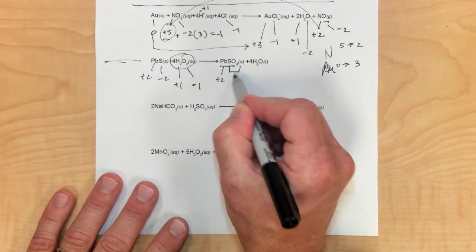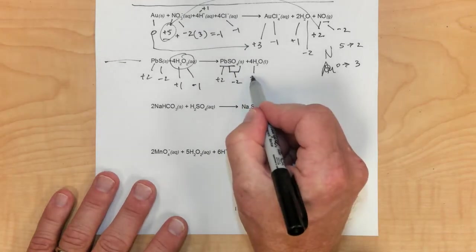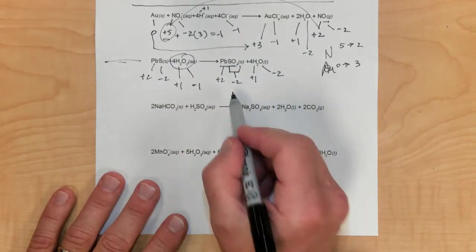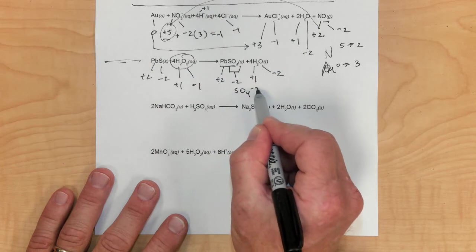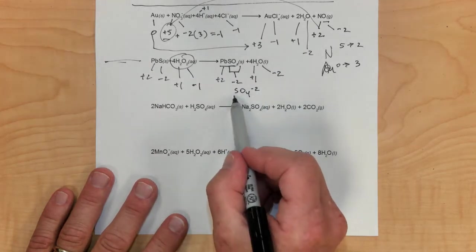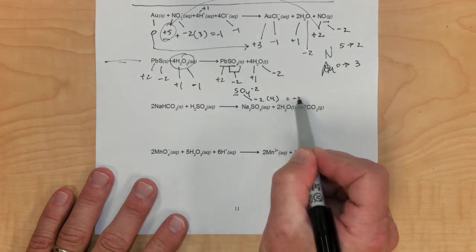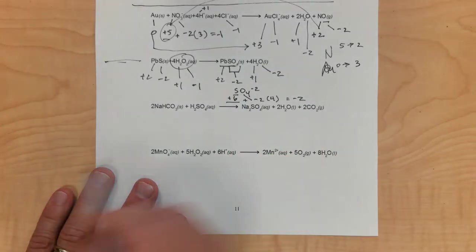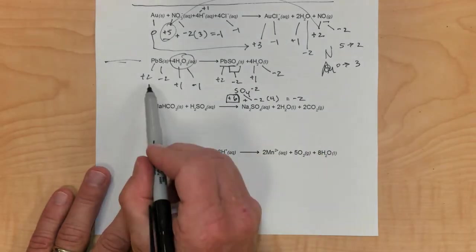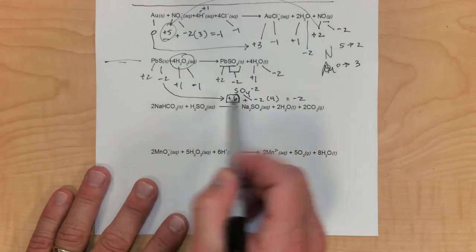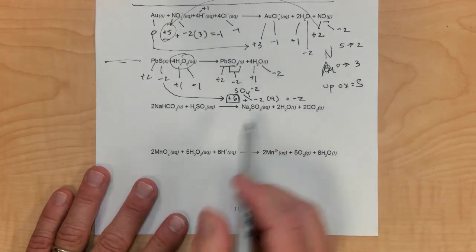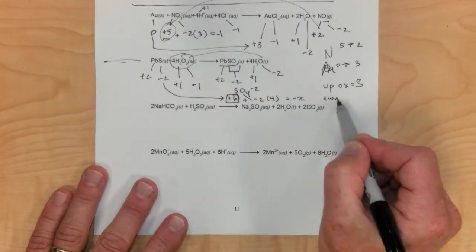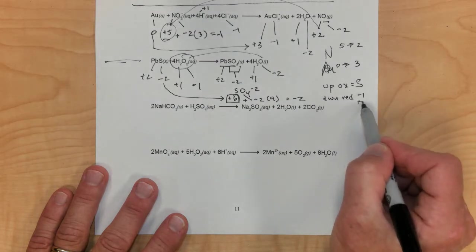You can use the rules of polyatomic ions to help. Lead would be positive 2 because that species would be negative 2. Water is positive 1 for hydrogen and negative 2 for oxygen. We have to break up SO4 since it's not present as a unit on this side. Since SO4 is 2 minus, we use the sum rule: oxygen is negative 2, there are 4 of them, so something plus negative 8 equals negative 2, meaning sulfur is positive 6. So sulfur goes from negative 2 to positive 6 — it's oxidized — and oxygen goes from negative 1 to negative 2 — it's reduced.